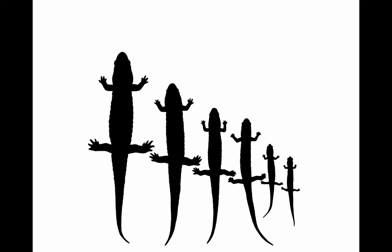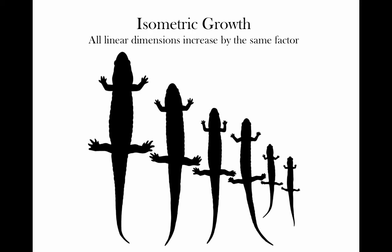Before we think about allometry, it's easier to first think in terms of isometric growth. Isometric growth is a kind of growth in which all linear dimensions increase by the same factor. All of these lizards, for example, are sort of scale models of each other. If their trunk is twice as long, each limb bone is going to be twice as long, their tail will be twice as long — each of these are just scale models getting bigger and bigger.